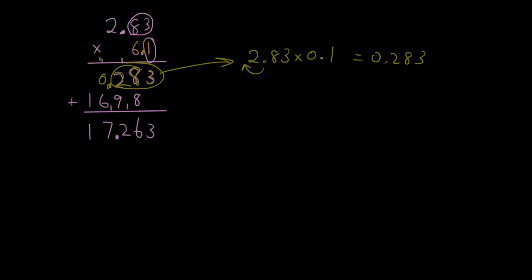And then the next number is 2.83 by 6. And you guys have already worked out the answer. So the answer is 16.98. So that's what this is. And then when you add them together, guess what? The decimal points line up. So then you got 17.263. So that's how multiplication works with decimal numbers.